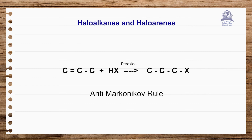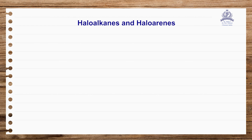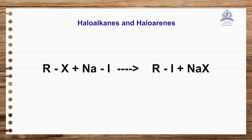Two or three more named preparation methods are covered. Preparation of alkyl halides by halogen exchange using sodium iodide gives alkyl iodides — this is the Finkelstein reaction. Sodium iodide is used with a solvent like acetone. This is the second named reaction, apart from Sandmeyer reaction, specifically for preparation of alkyl iodides.